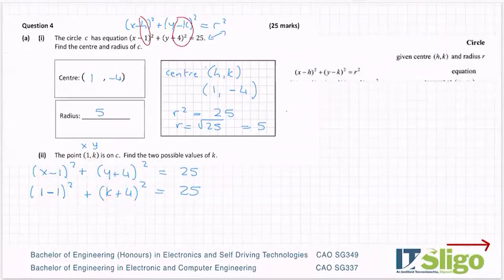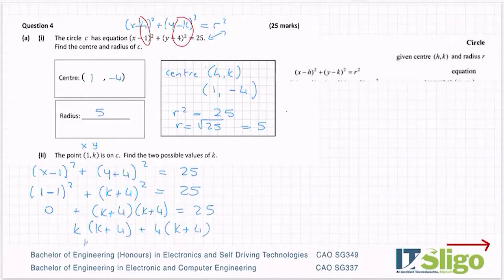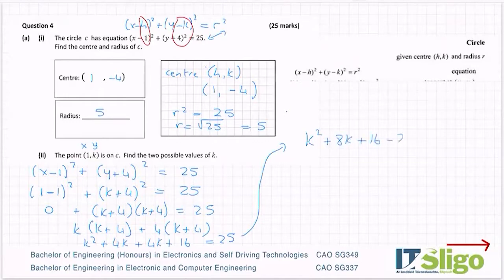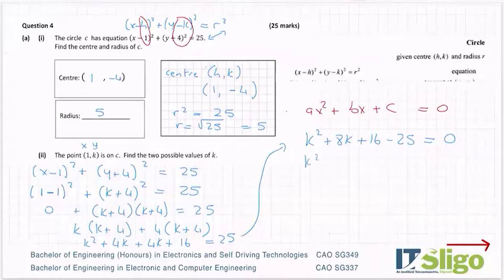Now let's do the algebra. 1 minus 1 is 0, 0 squared is 0. Then I expand (k plus 4) squared as (k plus 4)(k plus 4): k squared plus 4k plus 4k plus 16 equals 25. Collecting terms: 4k and 4k is 8k. I have plus 16, and bringing 25 over gives minus 25 equal to 0, forming the quadratic. Tidying up: k squared plus 8k plus 16 minus 25, which gives k squared plus 8k minus 9 equals 0.